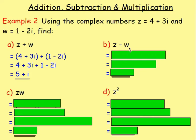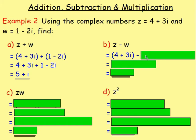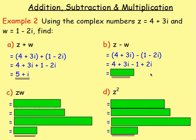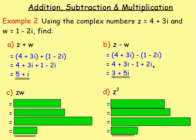For part b, Z − W: replace Z with (4 + 3i) and subtract (1 − 2i) — you must use brackets here. Expanding: 4 + 3i − 1 + 2i, because subtracting a negative gives plus. The real parts: 4 − 1 = 3. The imaginary parts: 3i + 2i = 5i. Answer: 3 + 5i.